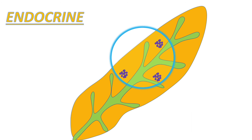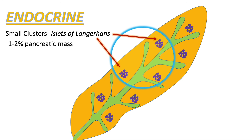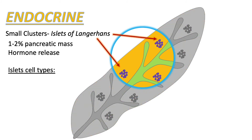Moving on to the endocrine portion: the endocrine cells are in small clusters called the islets of Langerhans. There are many of these on the pancreas, and these endocrine cells comprise about 1 to 2 percent of the pancreatic mass, compared to the exocrine cells at 98 to 99 percent. These cells specialize in hormone release. Within these islets there are various cell types: the alpha, beta, delta, gamma, and epsilon cells. The alpha and beta cells are most important in this context.